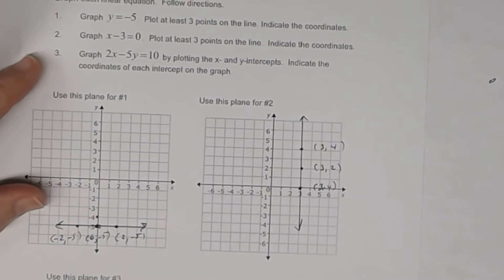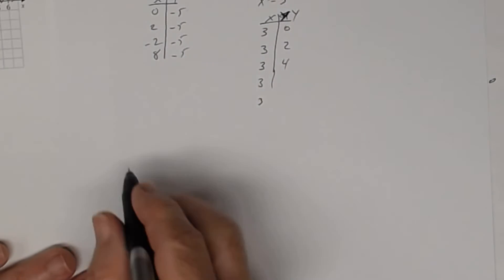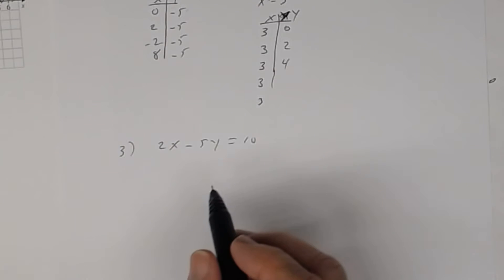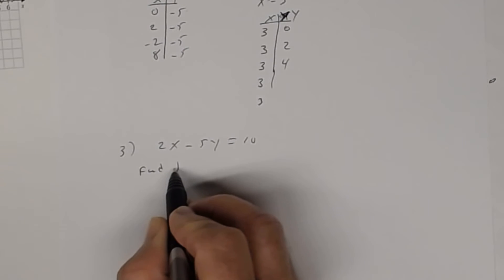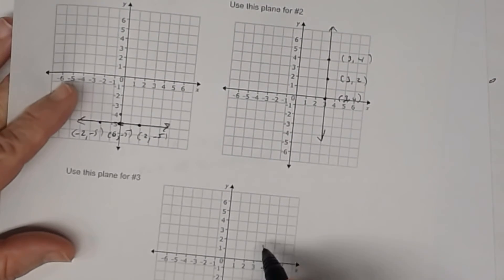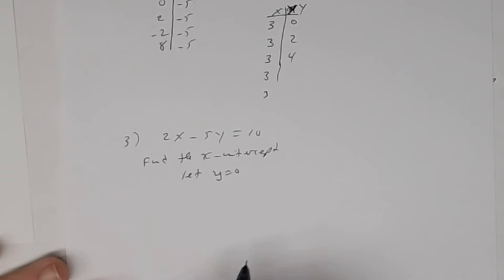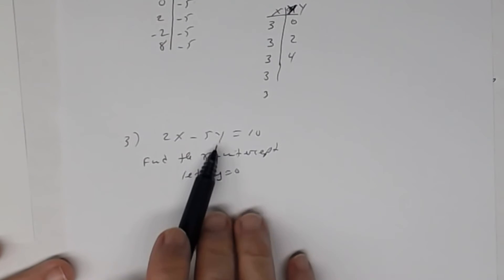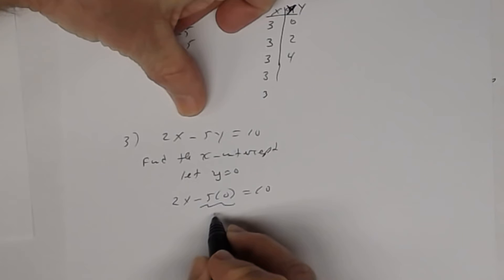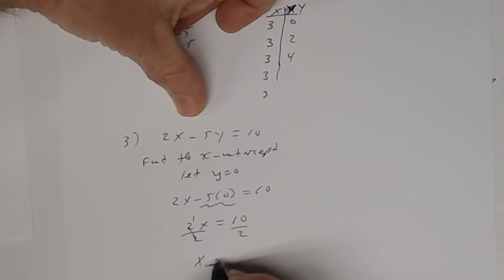Now when doing number 3, it was important to read how I wanted you to do this. I wanted you to do this by finding the x and y intercepts. So for number 3, you have 2x minus 5y equals 10. To find the x-intercept — remember, the x-intercept is where the graph crosses the x-axis, so the y-coordinate is 0. When I let y equal 0, I get 2x minus 5 times 0 equals 10. 5 times 0 is 0, so I get 2x equals 10. Divide both sides by 2 — the x-intercept is 5.